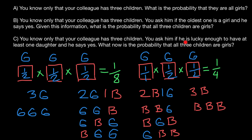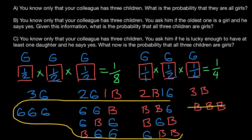Now let's revisit the question. You ask him if he is lucky enough to have at least one daughter, and he says yes. This means we can exclude the variant where all three children are boys, because in that combination there is no way to have at least one girl. But it doesn't exclude any other combination. So our sample space is seven combinations, and the probability that all three children are girls is one out of seven. That is the answer to the last question: one out of seven.